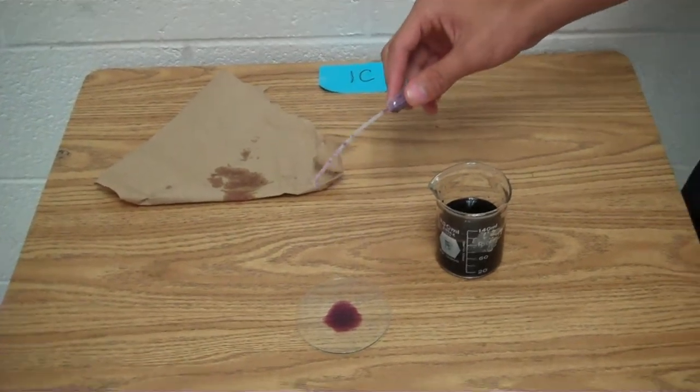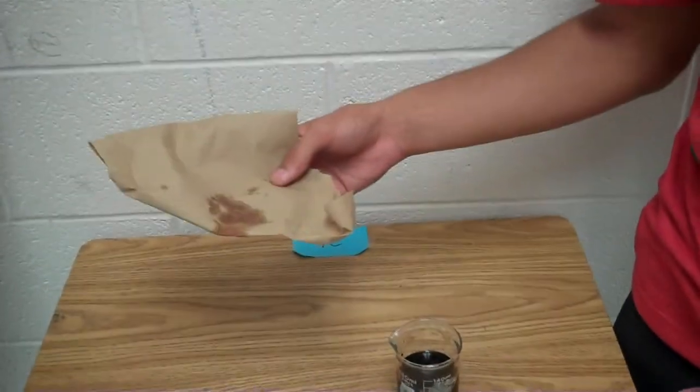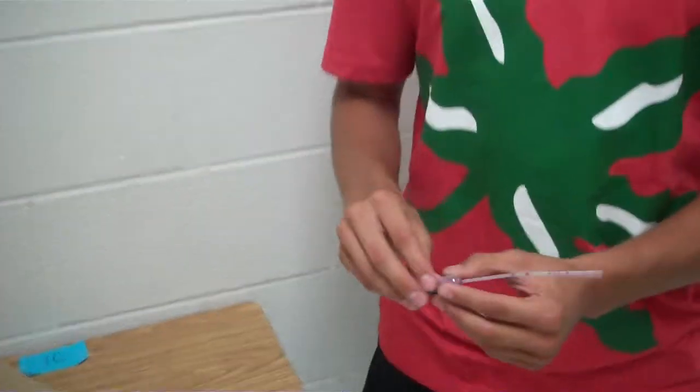Just in case there's any messes, to clean up the liquid, keep a paper towel handy. Alright, that's how you safely use the dropping pipette. Thank you.